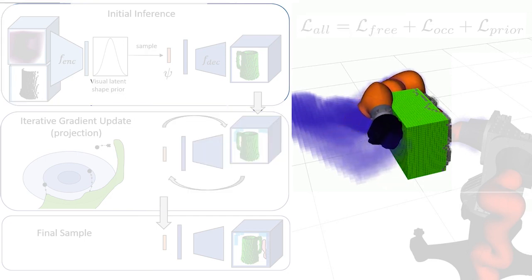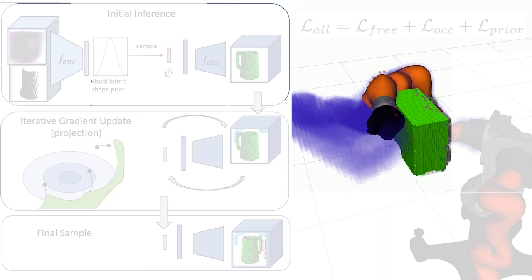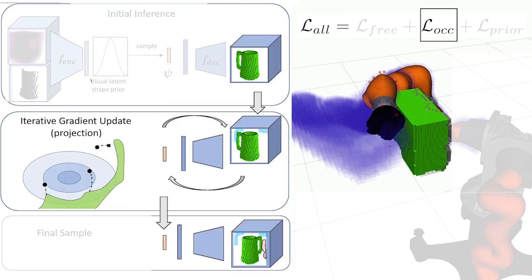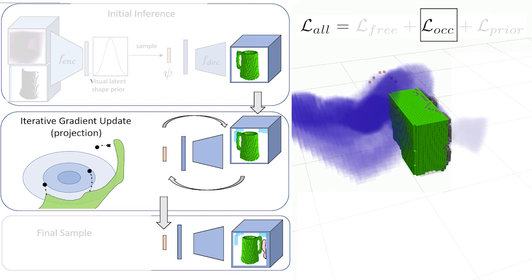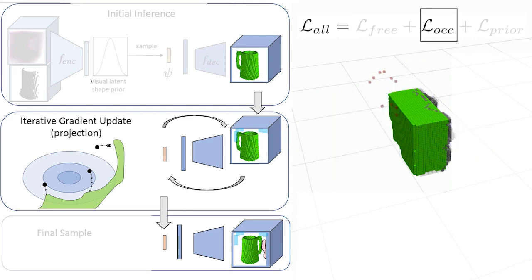As the robot keeps moving, it contacts the box. A robot can detect if it makes contact, but not where precisely the contact was made. The second term of this loss function captures this information, penalizing shapes that do not occupy at least one of these red voxels. We think of this as projecting sampled shapes onto the contact manifold in the latent space of the shape network.